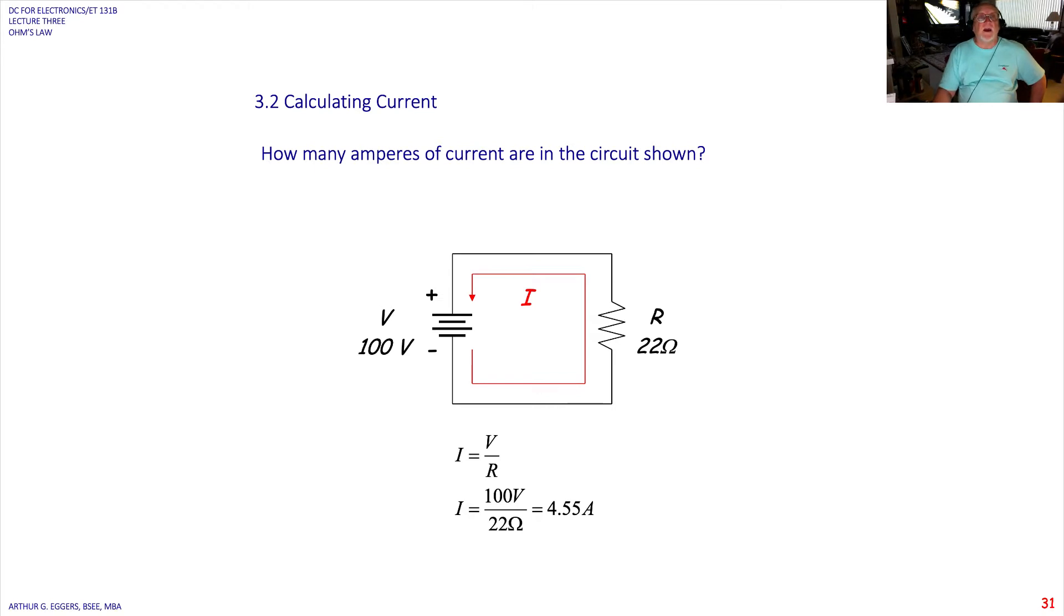How many amperes of current are in the circuits shown? So again, you move through each of what is known: 100 volts source, 200 ohm resistance. Don't know what the current is. So since we're solving for current, let's use this form, I equals V over R, like we have in the previous video. 100 divided by 22. Notice there are no metrics, there are no exponents here. So it's simply 22 divided into 100, and we get 4.55 amps.